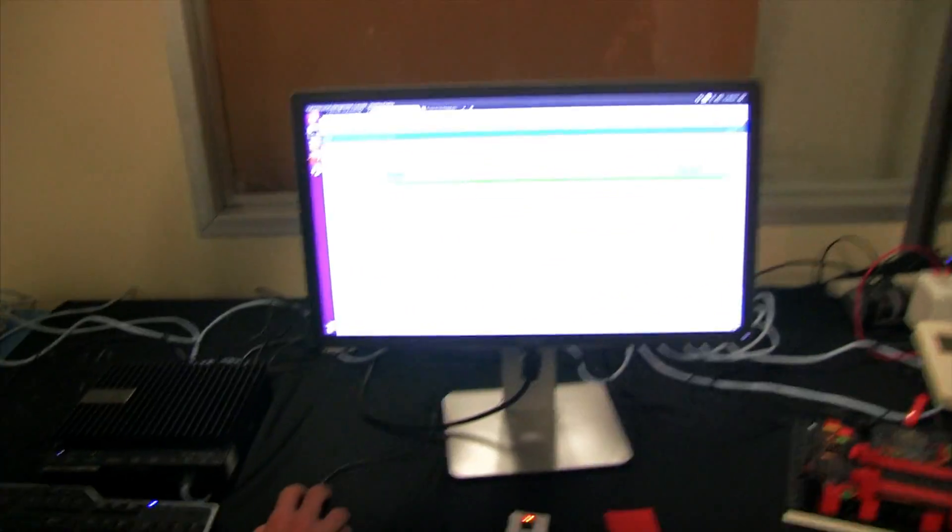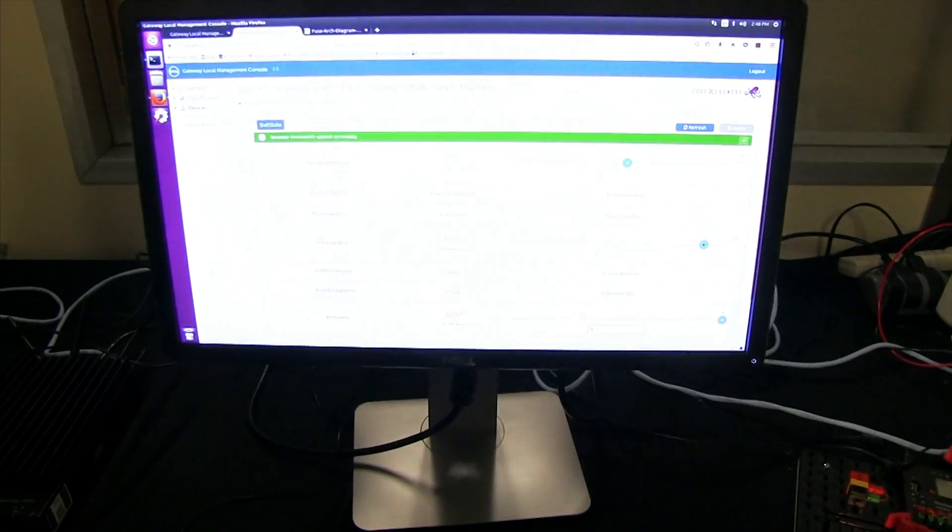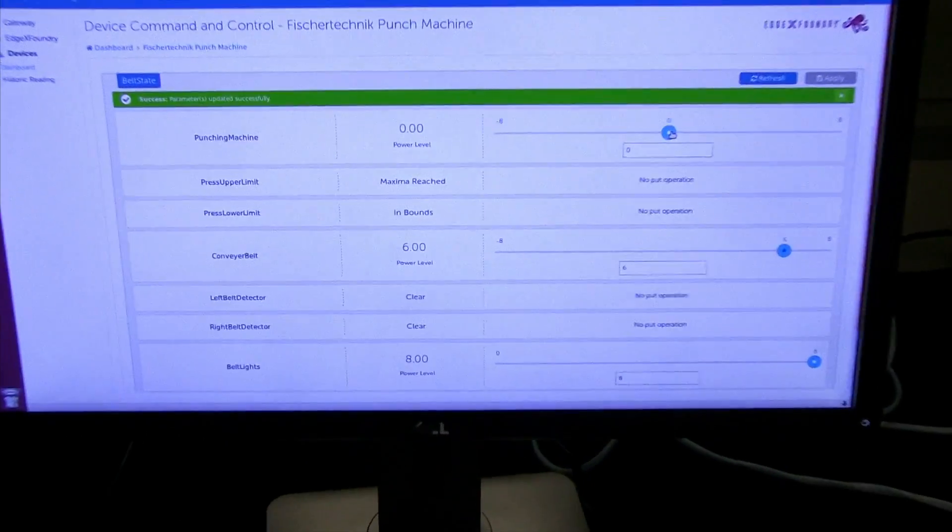More importantly, it's not just about gathering data and being able to actuate back down. It's being able to do those in combination, meaning you have to have what we call edge analytics - some smarts, some intelligence on that gateway that's watching all the data come in and able to translate that back down to actions on your systems. For example, if we move that punch machine here, I'm going to lower that arm down.